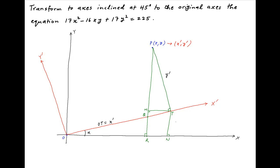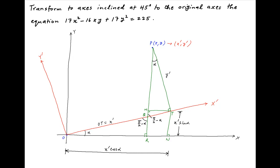Now in right angle triangle TON, the angle TON is equal to alpha, and therefore the perpendicular distance TN is equal to X' sin alpha, and the base of this triangle ON is equal to X' cos alpha. Now note that angle OQR is equal to pi upon 2 minus alpha, and therefore the vertically opposite angle PQT is also equal to pi upon 2 minus alpha. Therefore in right angle triangle PTQ, the angle TPQ is equal to alpha.